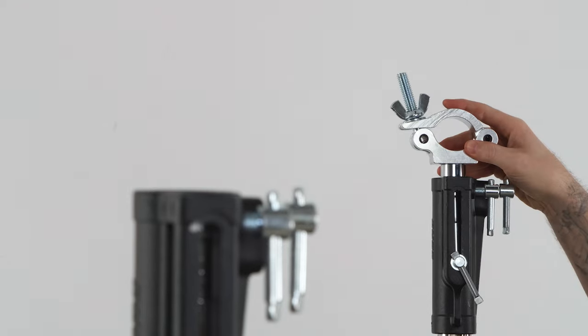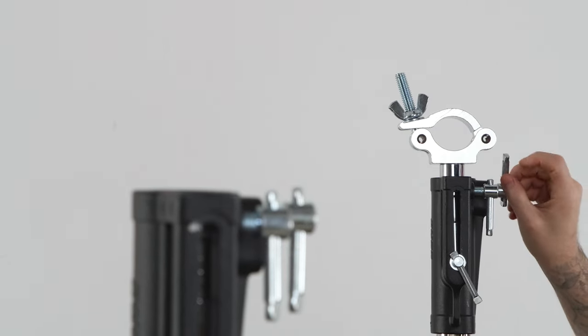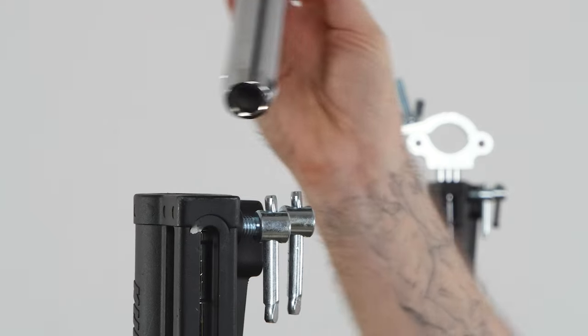First, we'll drop the junior pin into the junior receiver of the combo head on top of our wind-up stand and repeat with the other clamp.